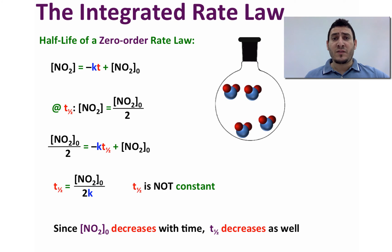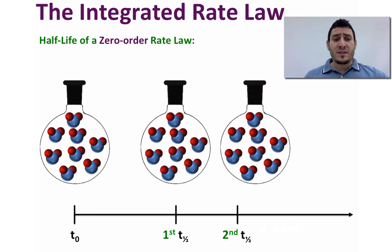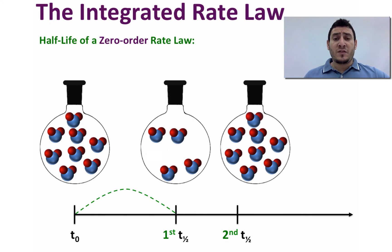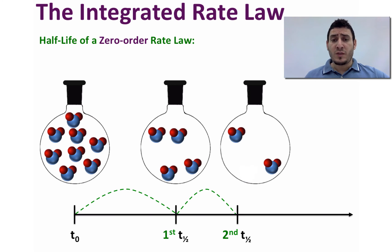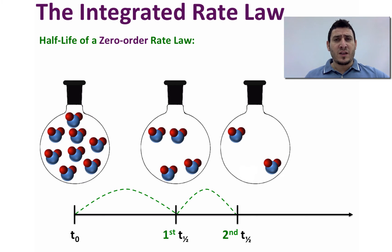Since the initial concentration decreases with time, the half-life will also decrease with time. For example, if you have eight particles at time t0, at the first half-life you consume four particles and four remain. For the second half-life you consume two particles. Comparing the two, the first half-life is longer than the second, confirming that the half-life is decreasing with time.